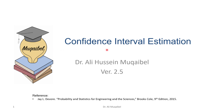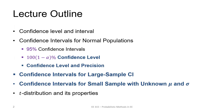In this lecture on confidence interval estimation, we have discussed point estimation and now we turn to interval estimation. We will cover the following topics: confidence interval, confidence level, and then focus on the example of normal populations, looking at the 95 percent confidence level as an example.